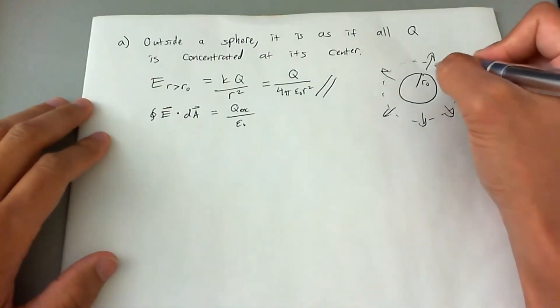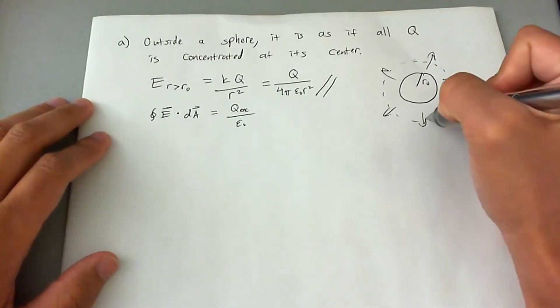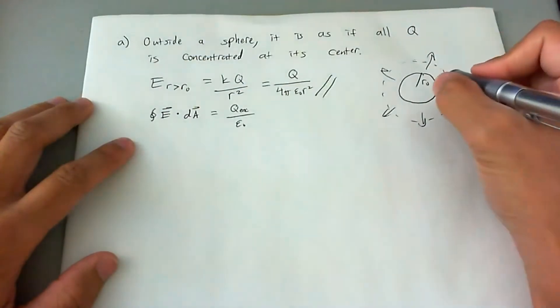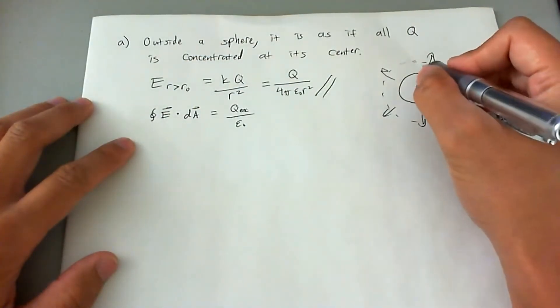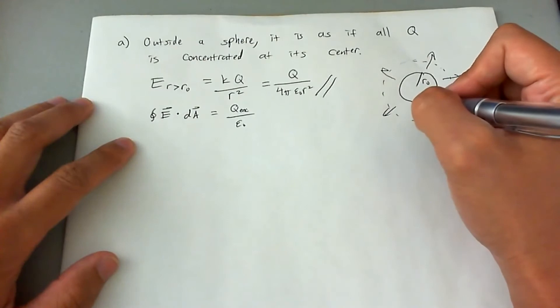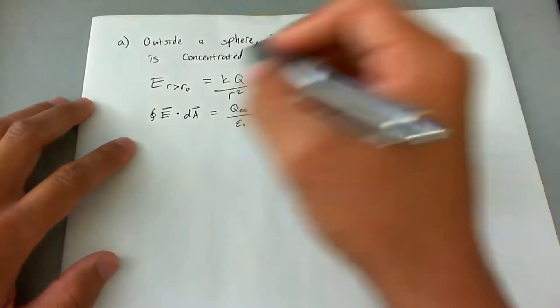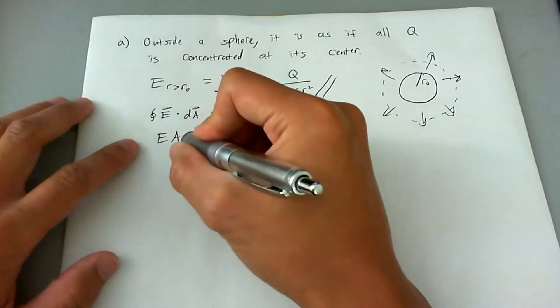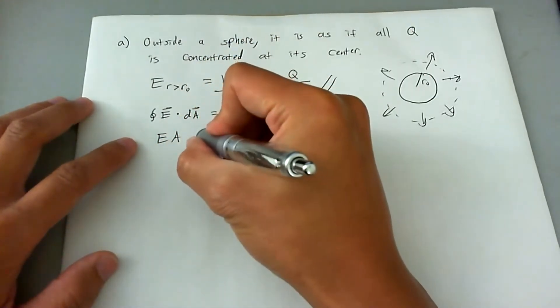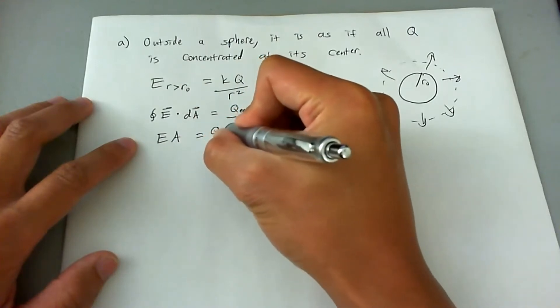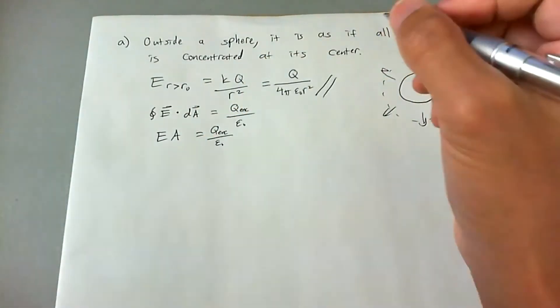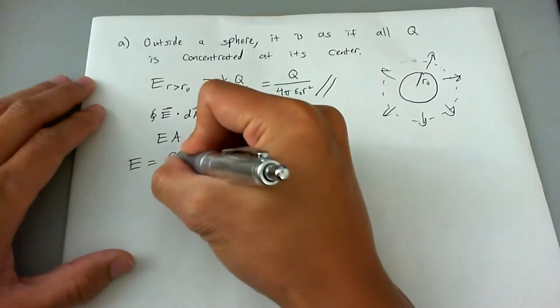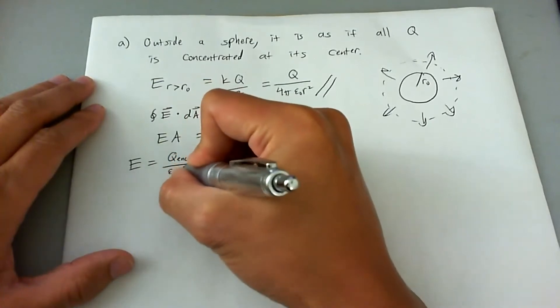And also the E field will not change from place to place on this Gaussian sphere. So this dA component is not necessary. Because of the symmetry and because of the fact that the E field always goes parallel with the area vector, then we can say that this integral becomes EA. We go ahead and say that EA is equal to the Q enclosed divided by epsilon naught. And E will then equal Q enclosed divided by epsilon naught A.